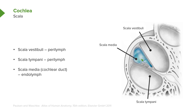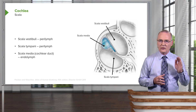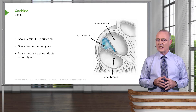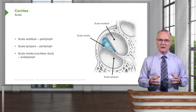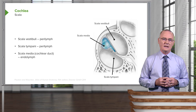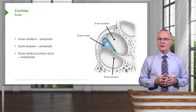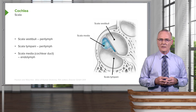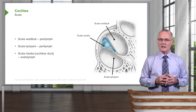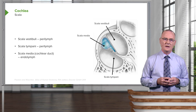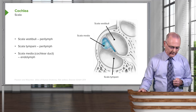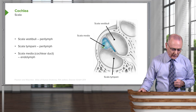The endolymph is very unique in its ionic concentration. Normally extracellular fluid is very low in potassium; however, the endolymph of the scala media is extremely high in potassium ion concentration. This assists greatly in the depolarization of the hair cells and also reduces their ATP requirements. The endolymph is secreted by a specialized epithelium called the stria vascularis.